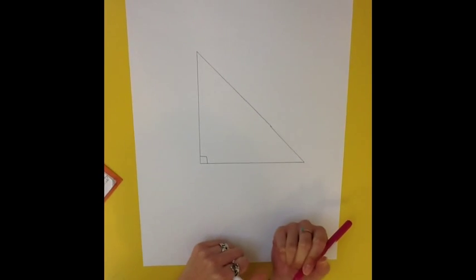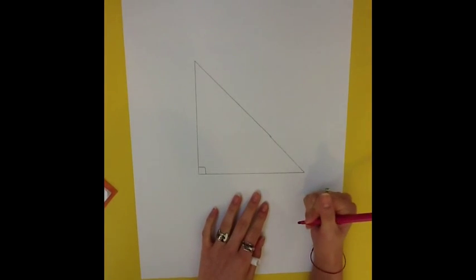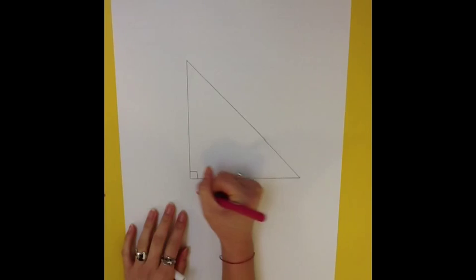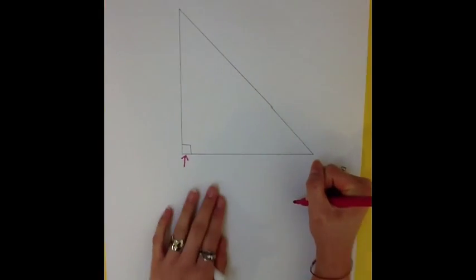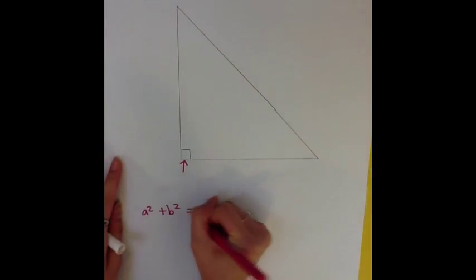Trigonometry Essentials for your upcoming exam. Pythagoras' theorem is a rule that applies to right angle triangles. The theorem states that a squared plus b squared equals c squared.